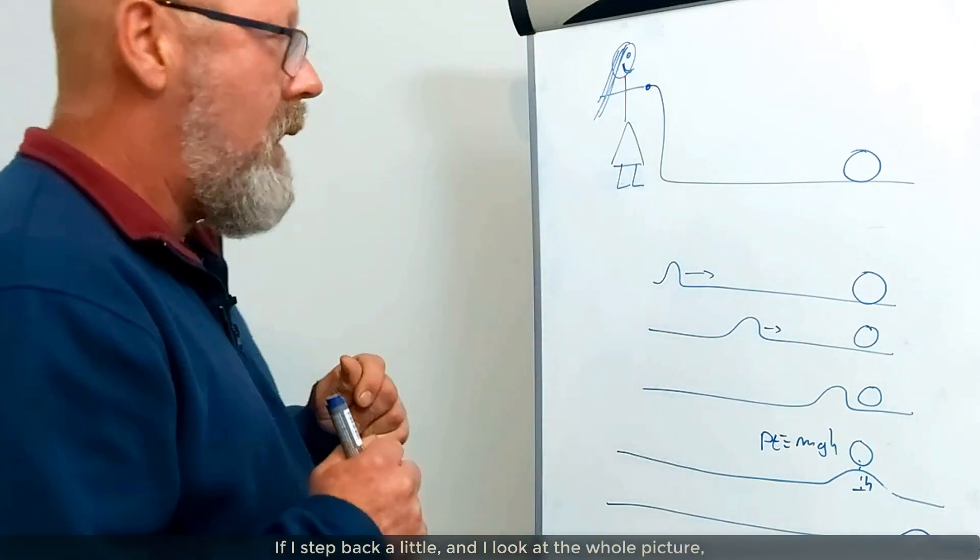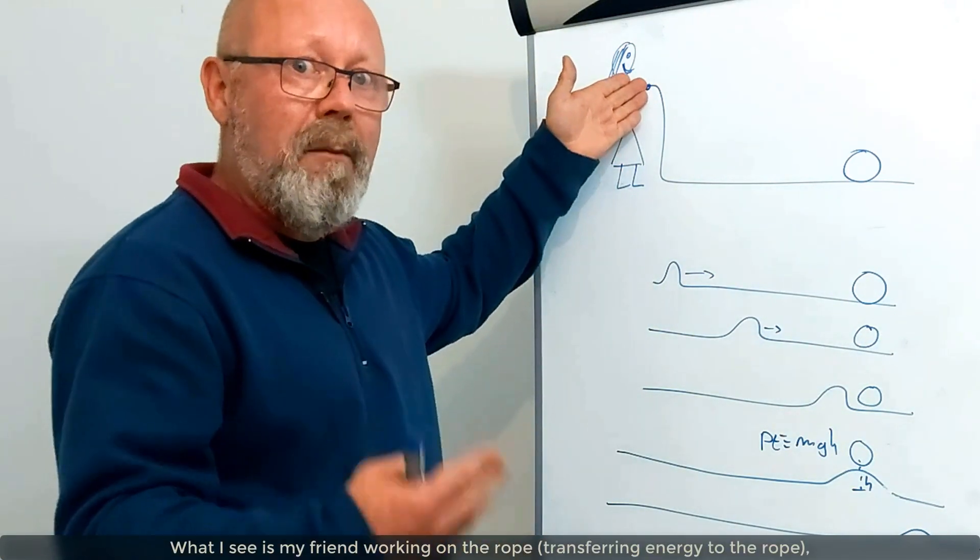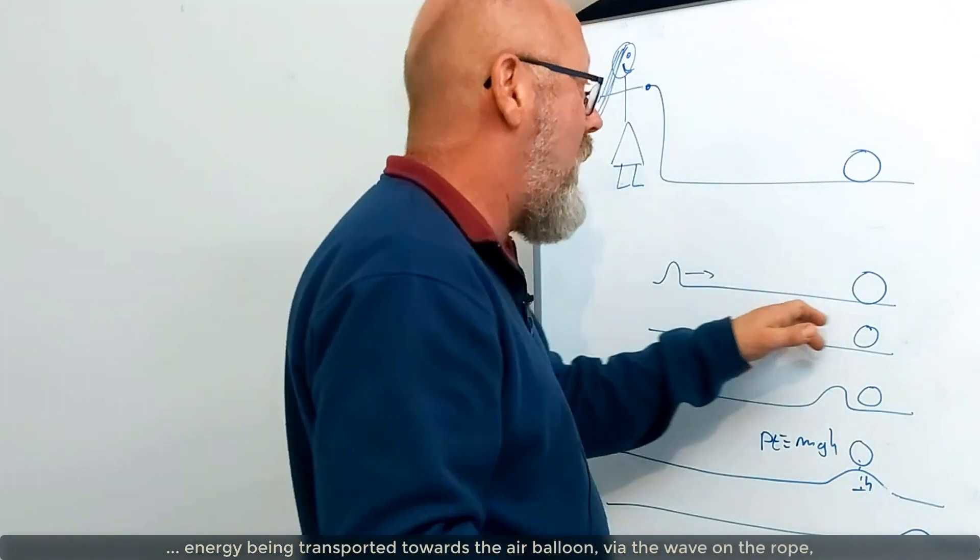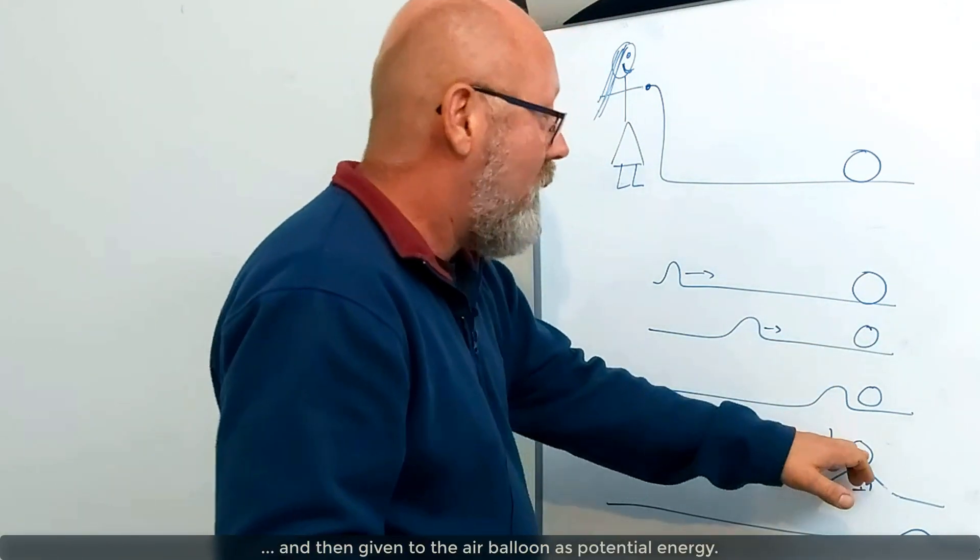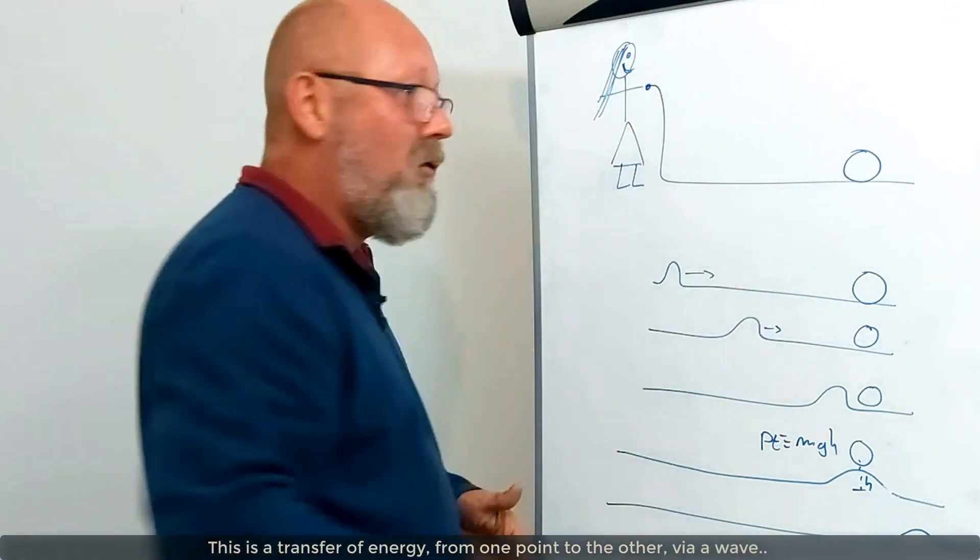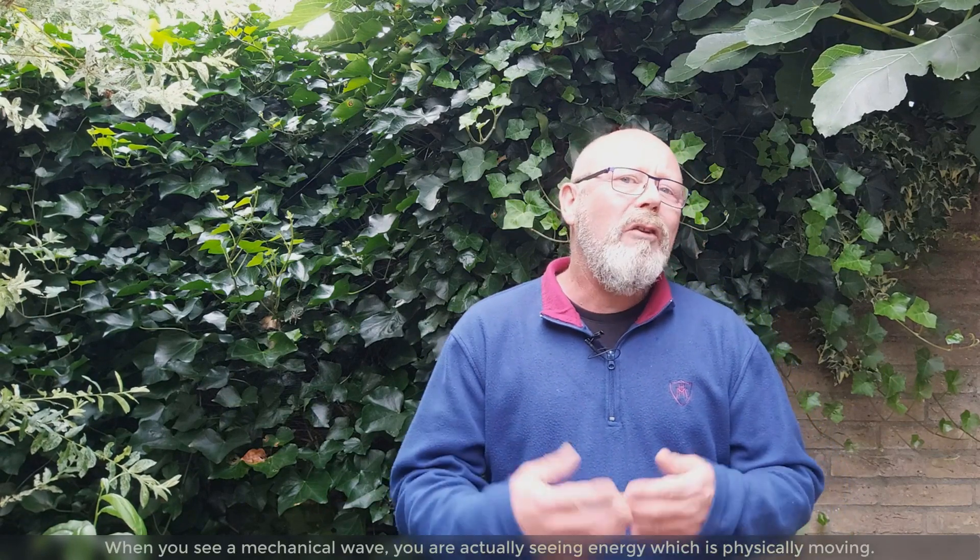If I step back a little and I look at the whole picture, what I see is my friend working on the rope, transferring some energy to the rope, energy being transported towards the air balloon via the wave on the rope, and then given to the air balloon as potential energy. This is really a transfer of energy from one point to the other via a wave. So a wave is actually the way energy propagates. When you see a mechanical wave, you are actually seeing energy which is physically moving. It's like a vehicle that emerges when energy needs to move from one place to another.